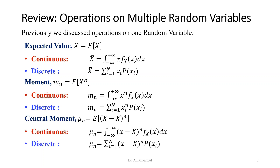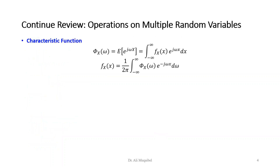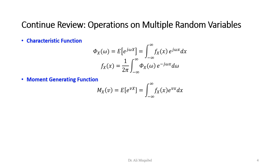We looked at the central moment — in the central moment you can see that we are subtracting the average. If you recall, we called these m's and the central moments were called mus. Then we looked at the characteristic function, defined the characteristic function, defined the moment generating function, and showed that we can use these to find the moments.